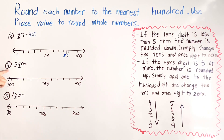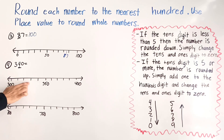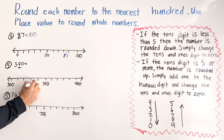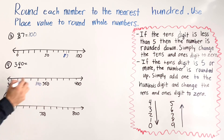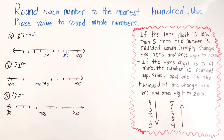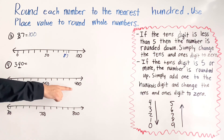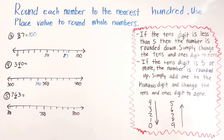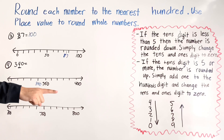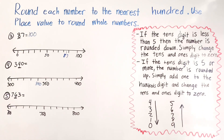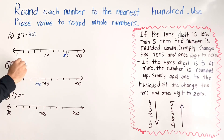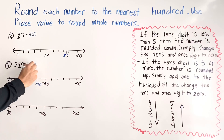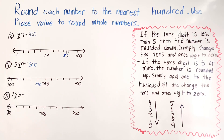For number five we have 340. On the number line: 300, 310, 320, 330, 340. We look at the tens place, which is four. Is it closer to 300 or closer to 400? We look at our arrow — four means rounding down. So instead of rounding to 400, we round down to 300, because 340 is closer to 300 than 400.